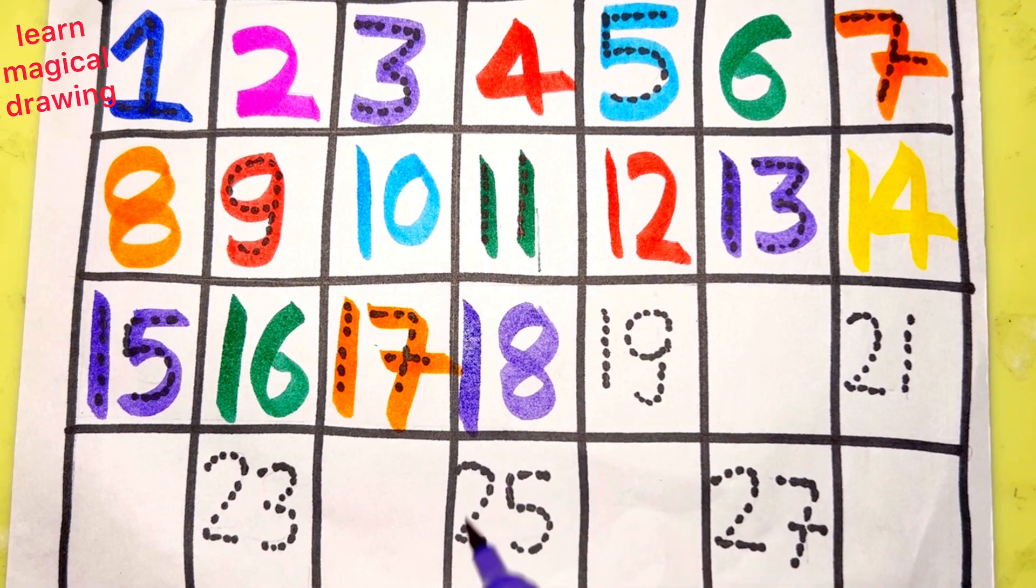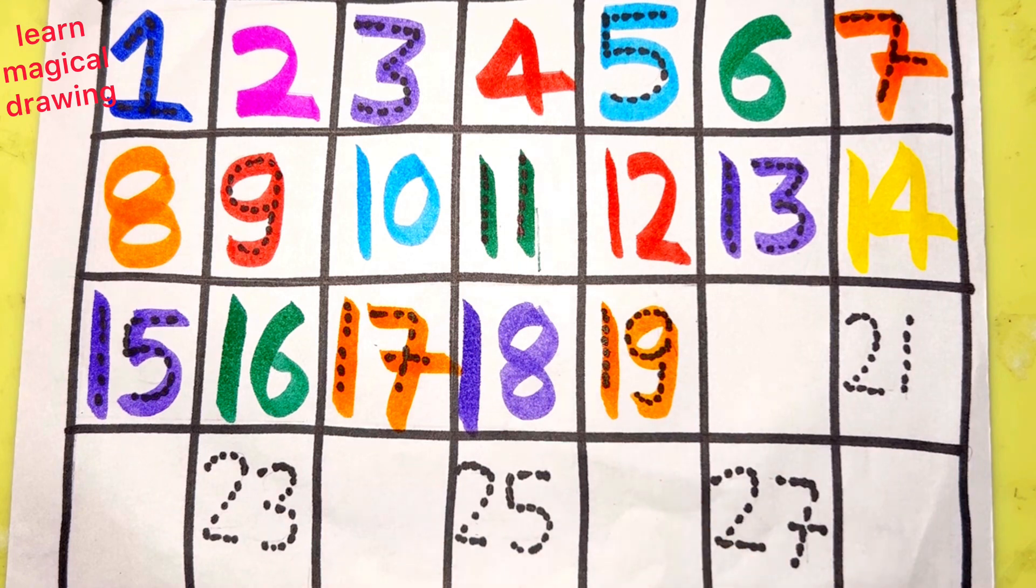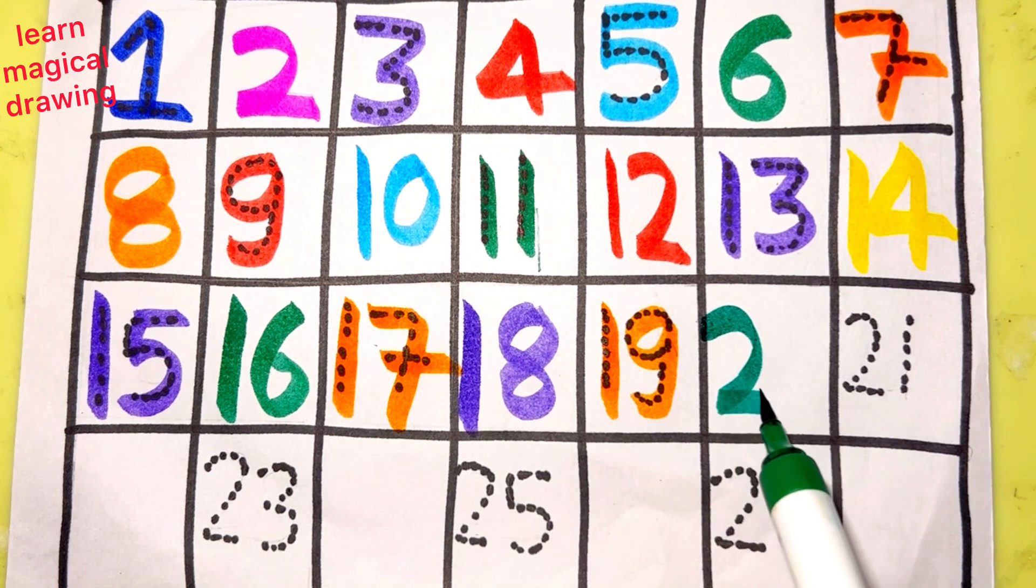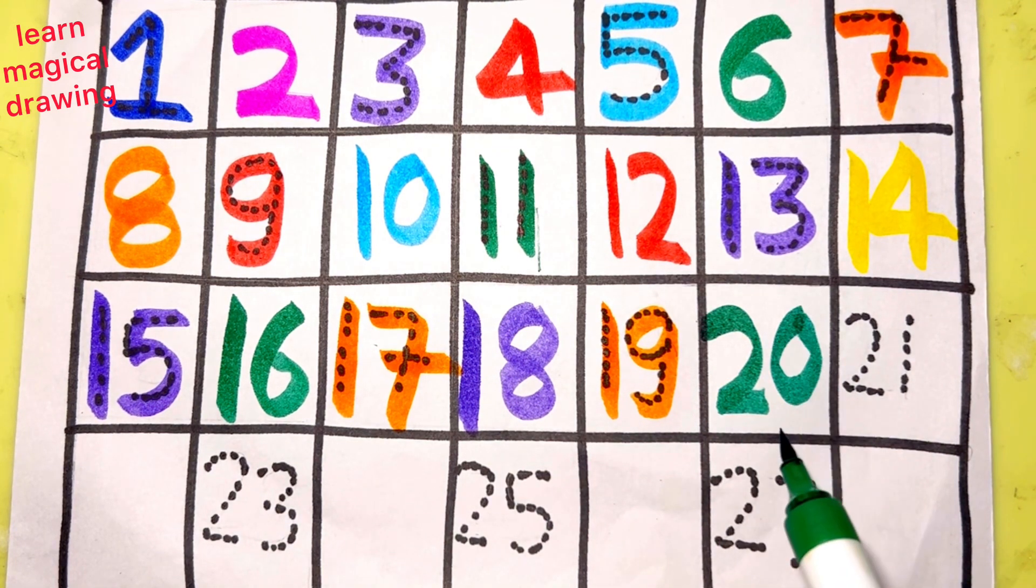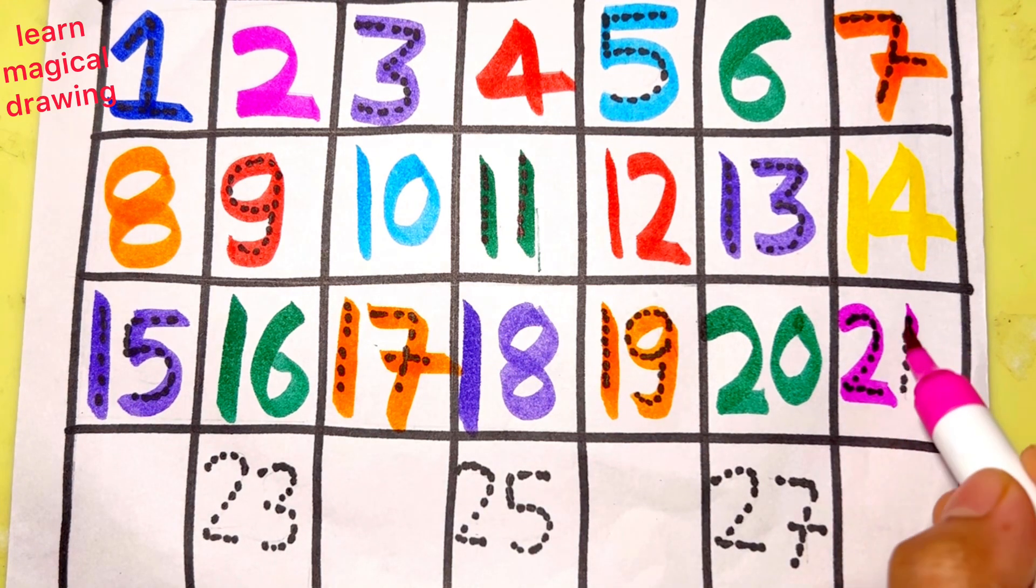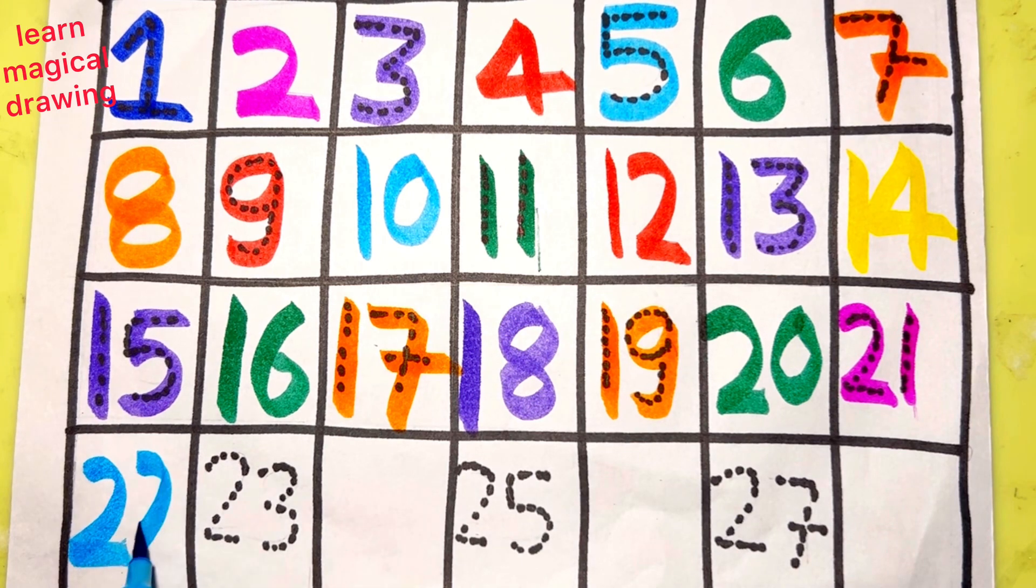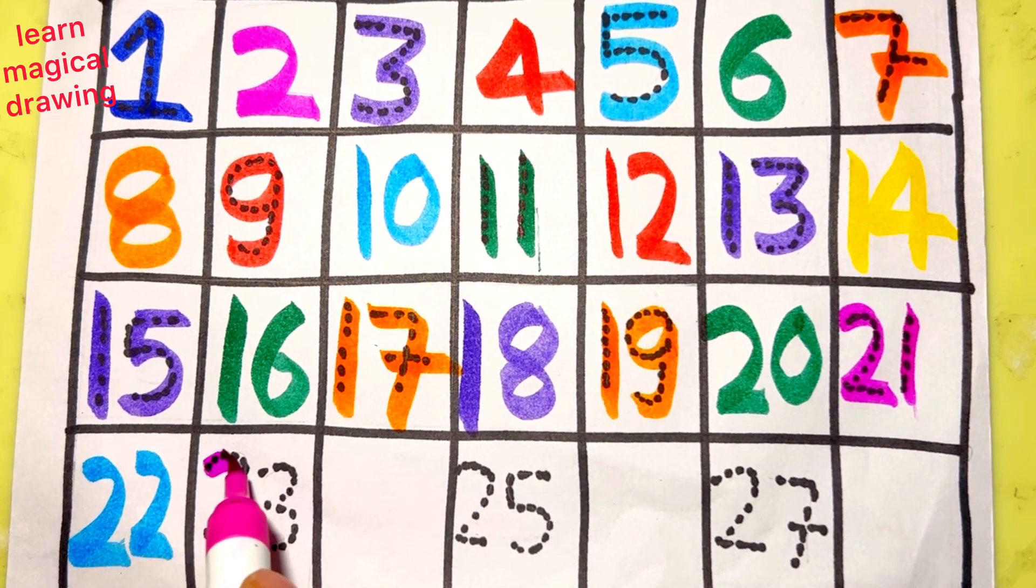1 8, 18. 1 9, 19. 2 0, 20. 2 1, 21. 2 2, 22.